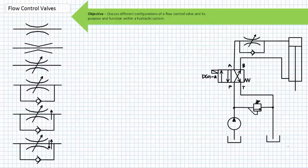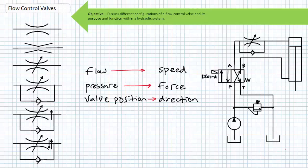First and foremost is a quick review about basic hydraulic circuits where three outputs of a hydraulic system — speed, force, and direction — are controlled by three independent properties: flow, pressure, and valve position. Realize that I have been consistent with this definition throughout the course of this series and I will continue to remain so.